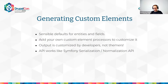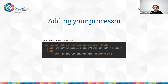Rather than using templates, we figured it's better to create an API that works like the Symfony serialization and normalization API. You create a new service for your processor and register it in your module's services YAML file. For example, implementing a processor for a Twitter paragraph: you register the service, tag it with the 'custom_elements_processor' tag, and optionally set a priority. The highest priority processor will render and process the data and generate the custom element.